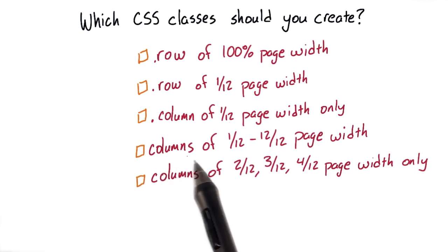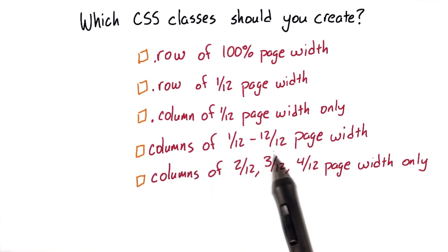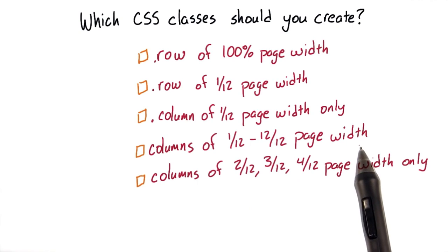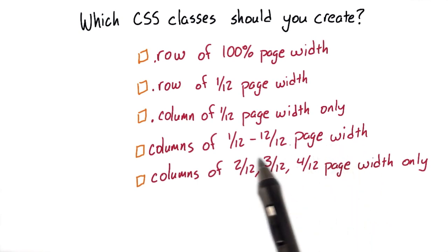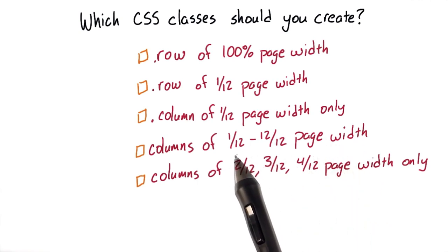Will we need to create multiple columns of everything between 1 over 12 and 12 over 12 page widths? That means we'll need to create a column class for 1 over 12 page widths, one for 2 over 12 page widths, one for 3 over 12 page widths, one for 4 over 12 page widths, and so on.